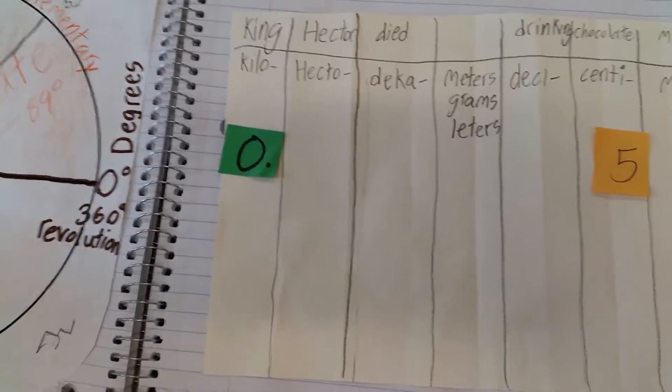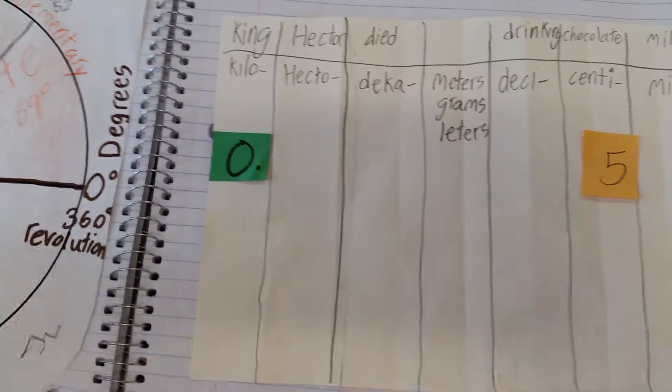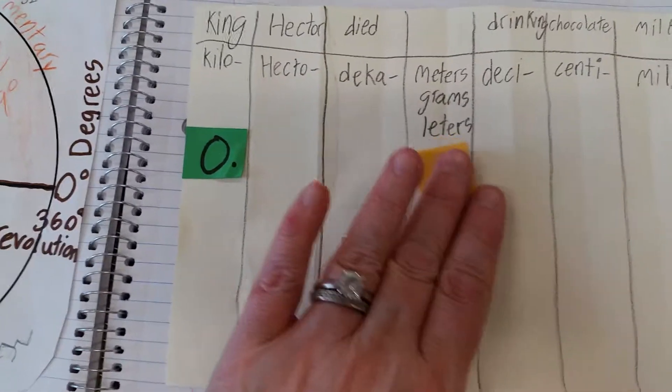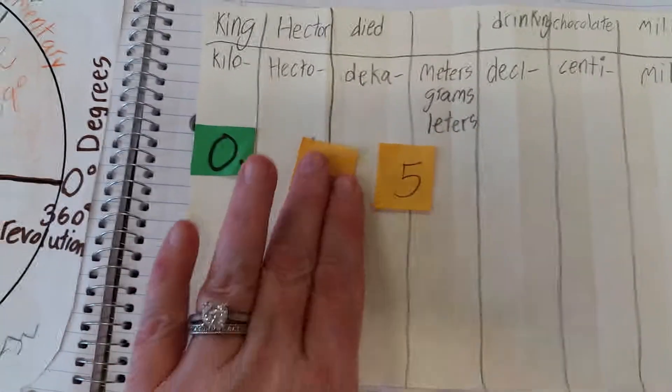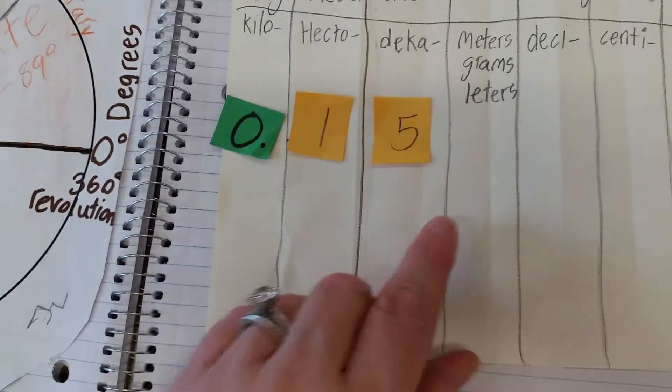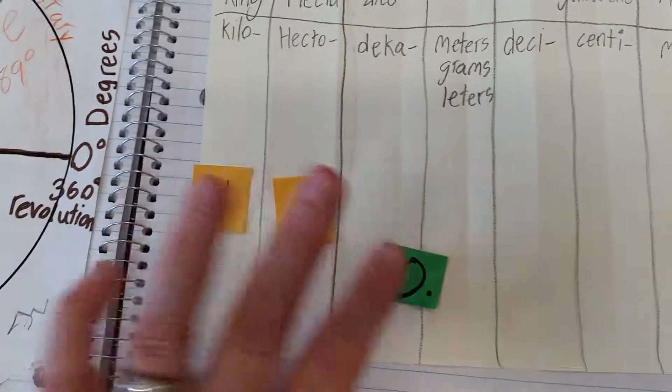Now you're probably thinking, what if I have a double digit number? Let's say I have 15 decameters. How would I do that? Well, first of all, you do it pretty much the same.